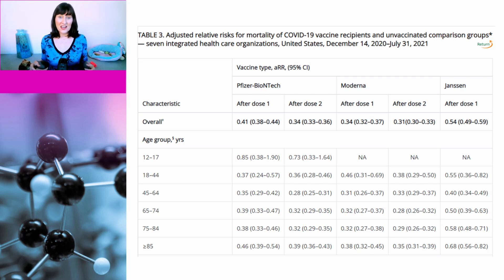For all age groups, your risk of dying from non-COVID causes is lower if you are vaccinated. Although in the case of those aged 12 to 17, the difference is not statistically significant because mortality is low overall in this age group. They also analysed the data by sex and race, and again, COVID vaccination was associated with lower non-COVID mortality — the exact opposite of what you would expect if vaccines were associated with excess mortality.